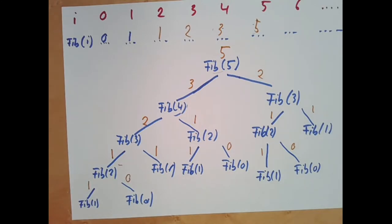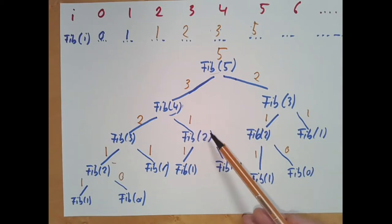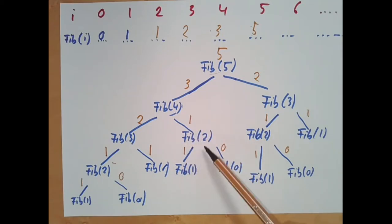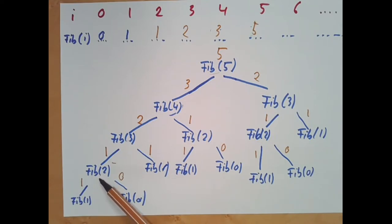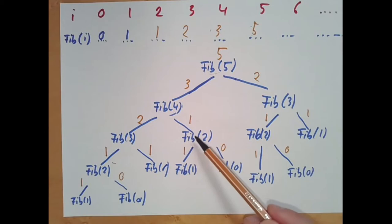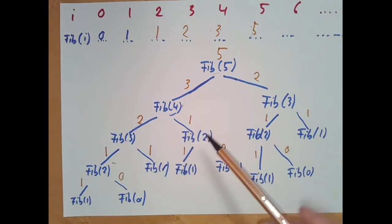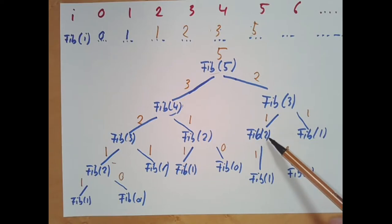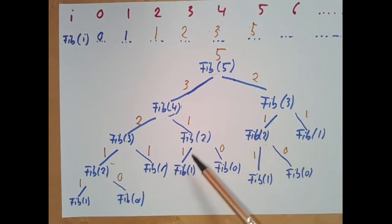What we can already see in the recursive approach is that a lot of redundant work has to be done. Fibonacci of 2 appears multiple times across the tree — on the left-hand side we calculate it, but on the right-hand side we calculate it again from scratch. Similarly, Fibonacci of 3 appears in multiple nodes. We have lots of nodes where we redundantly calculate the same Fibonacci number given the same index.